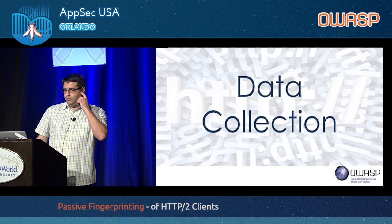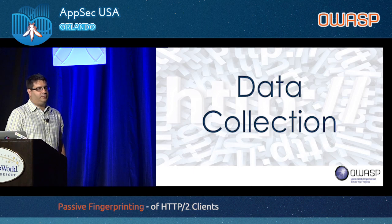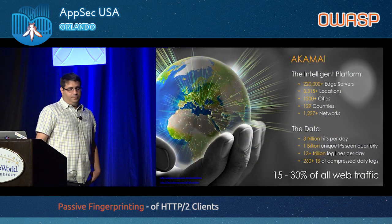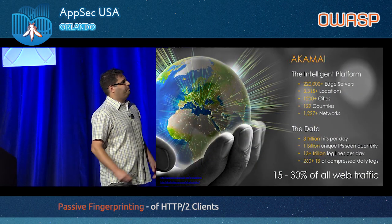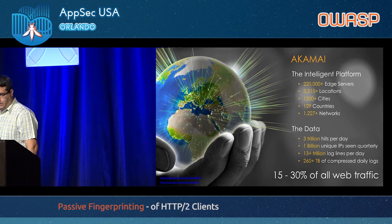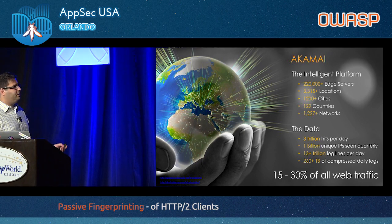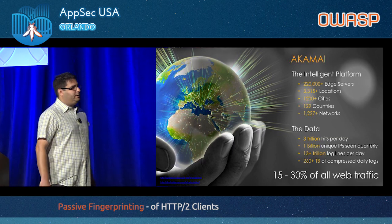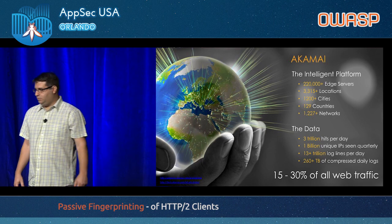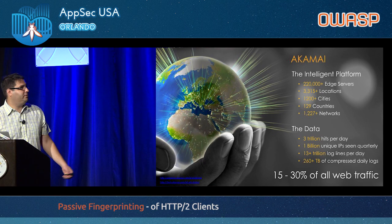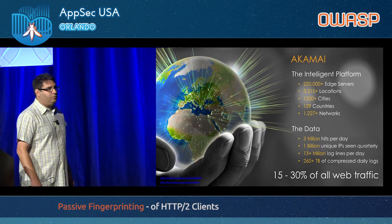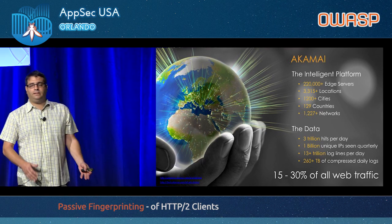Setting out to do the research, we needed a lot of data, and I'd like to spend a few words on our data source. This is the Akamai platform. For those of you who don't know Akamai, it's one of the leading CDN companies and it hosts content for a lot of huge companies across the world. It has about 220 edge servers worldwide, which are usually a hop away from about 90% of internet users. As a result, we get to see approximately 15% to 30% of all web traffic, including HTTP/1 and HTTP/2 traffic.